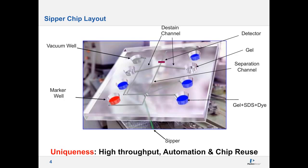Here I would like to describe the overall layout of the chip so we can exactly understand what is happening in this assay and rationalize our results based on the chip layout and chip process. The chip has many wells — some reservoirs are shown in green, some not colored, some red — and they are connected via channels.